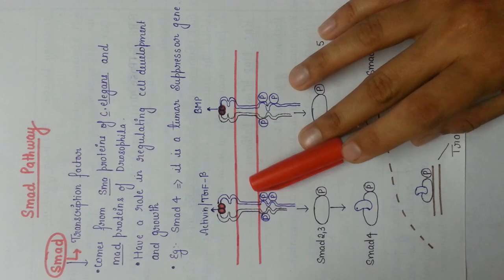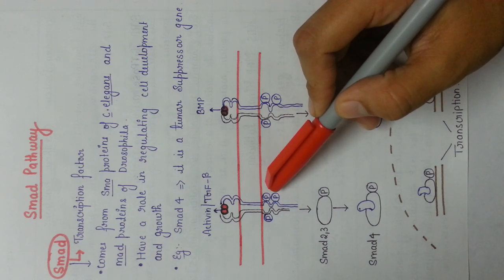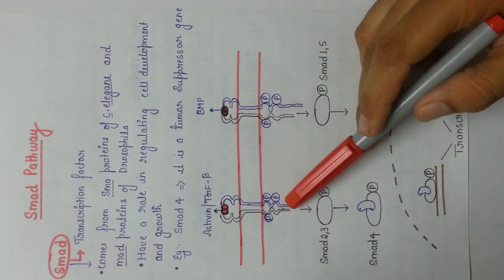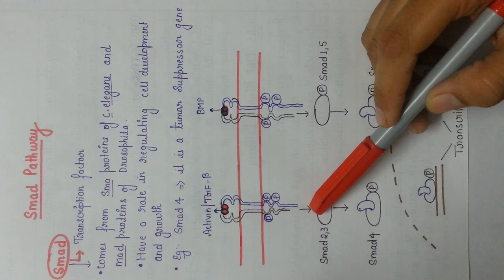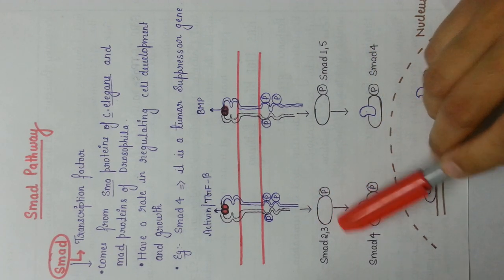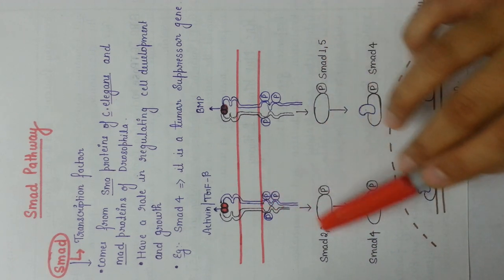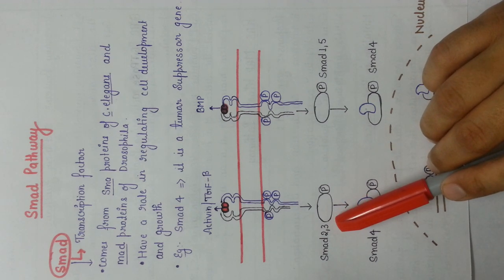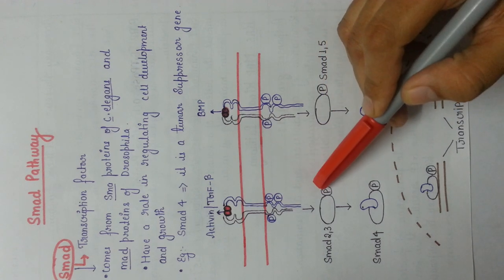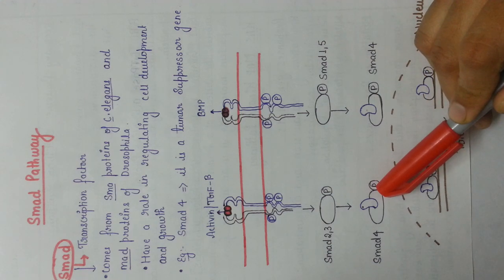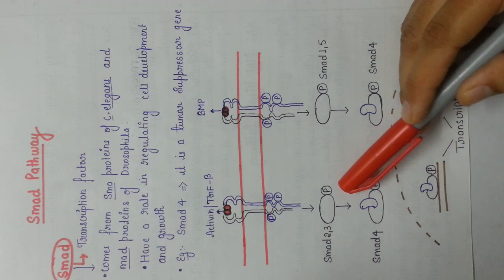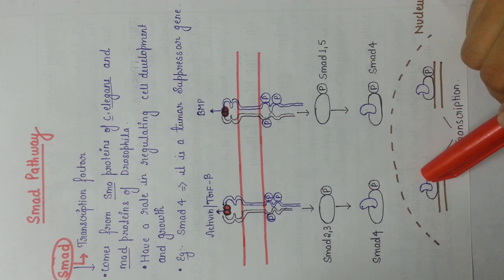When receptor 2 is activated, it will lead to the phosphorylation of the serine-threonine residues present on receptor 1. Ultimately, this will directly phosphorylate one of your transcription factors already present in the cytosol — that is your SMAD family proteins. Basically, activin and TGF-β will activate SMAD2 and SMAD3. They will phosphorylate these SMAD proteins, and as soon as these SMAD proteins get activated, they will be released into the cytosol and form a dimer with another SMAD protein — that is your SMAD4. This phosphorylated dimer will translocate from the cytosol to the nucleus, bind to a particular DNA sequence, and lead to transcription and regulation of your cell development and growth.